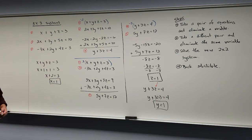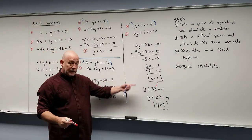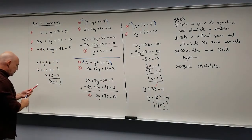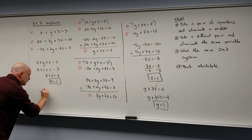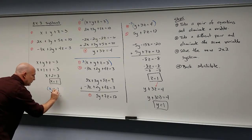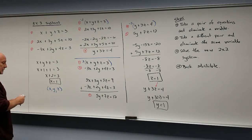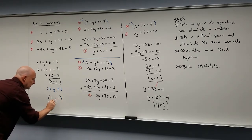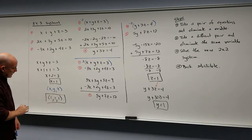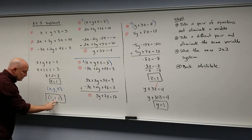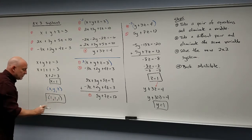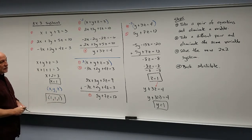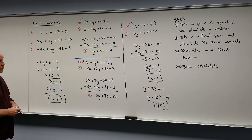Now, how do we represent this answer? In two dimensions we'd use an ordered pair with x and y values. When we're in three dimensions, a point is given as an ordered triplet: x, y, and z. So our answer is the point (1, 1, 1). Since this system has one point of intersection, we say that this is a consistent system.